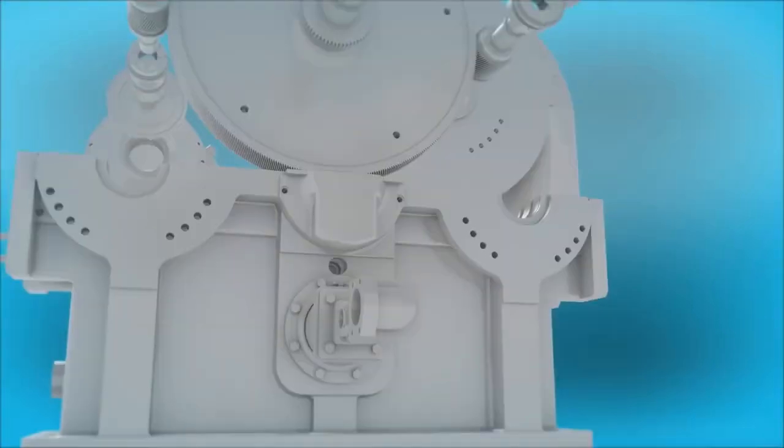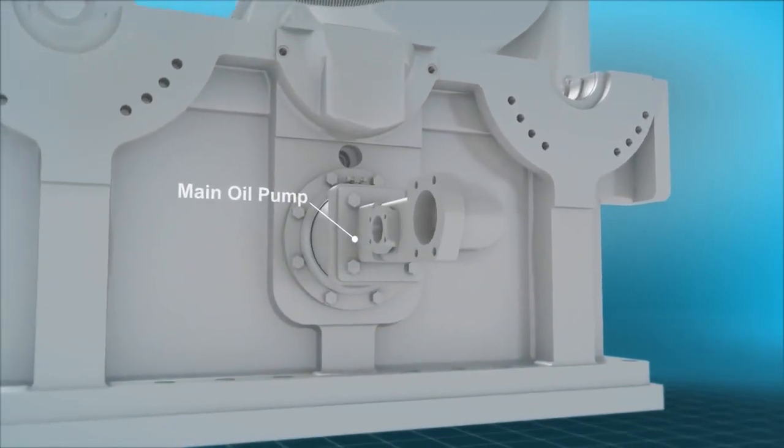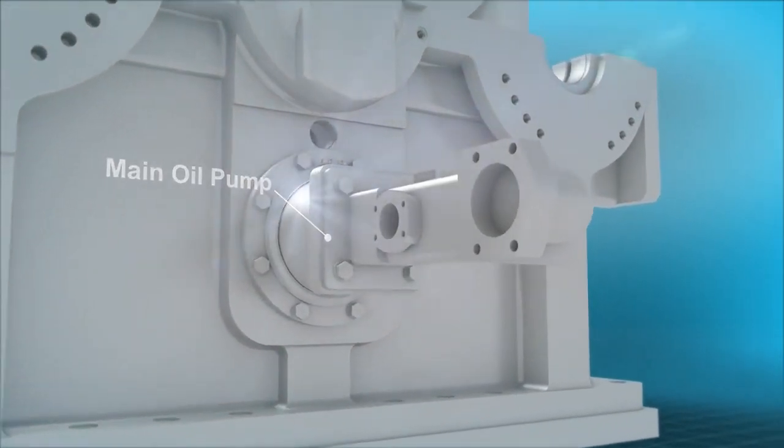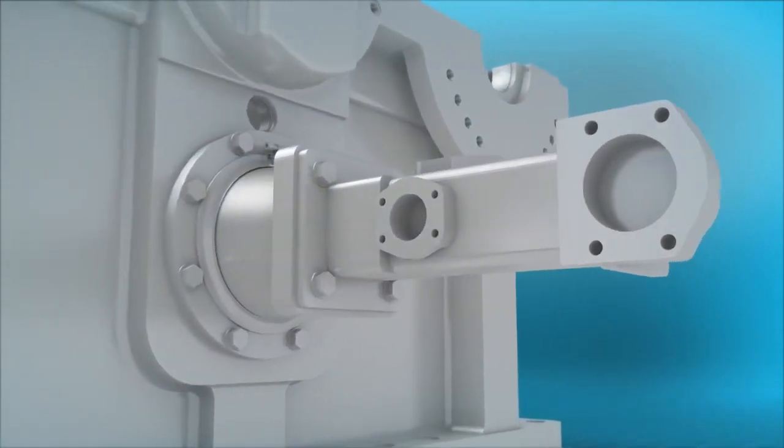Compressor bearings and gears are lubricated by the main loop oil pump, which is driven through the bull gear for reliable oil flow.